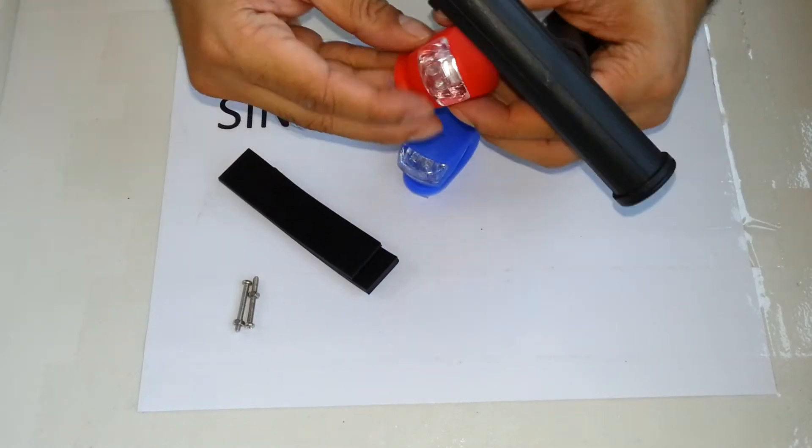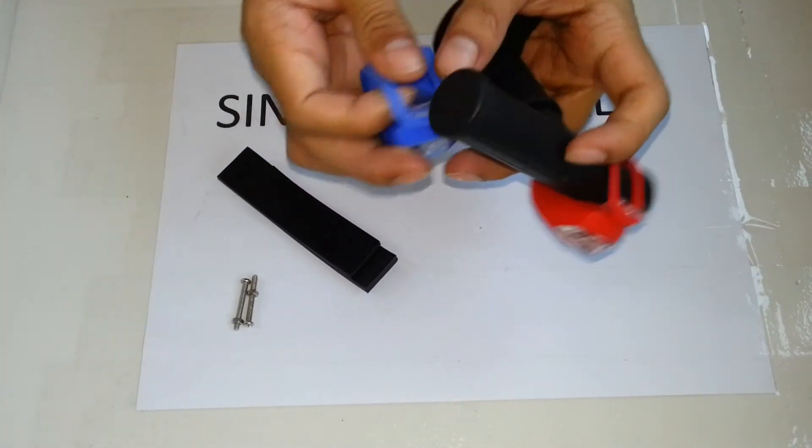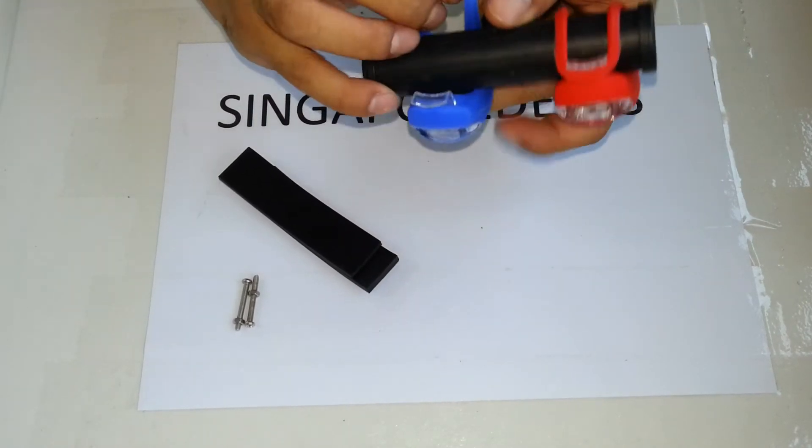With me here today are two frog lights which are attached here. Let's say you want to have additional lighting onto your bicycle. Not a problem at all.